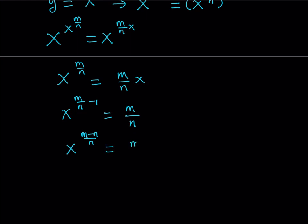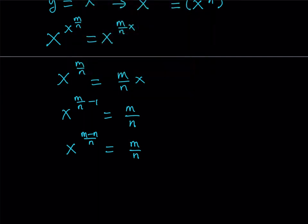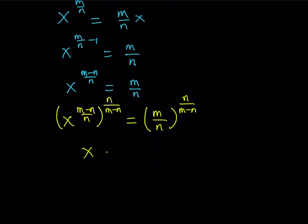Now, since I'm trying to solve for x, I'll raise both sides to some power. I'll raise both sides to the reciprocal of the exponent, which is n over m minus n. The product is 1, giving me x. I do the same on the right hand side. From here, x equals m over n to the power n over m minus n. m and n are different, so m minus n is never 0.